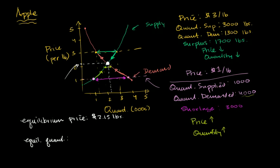The equilibrium quantity looks like it's right about 2,200 pounds. Assuming nothing else changes, this is a good scenario for both consumers and producers. They keep producing 2,200 pounds, charge the equilibrium price, and everything's happy — all the apples get sold and none of them go bad.